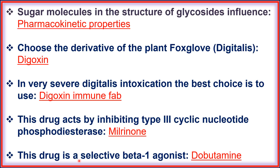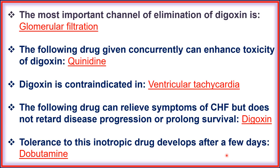Dobutamine is a selective beta-1 agonist. The most important channel of elimination of digoxin is glomerular filtration.